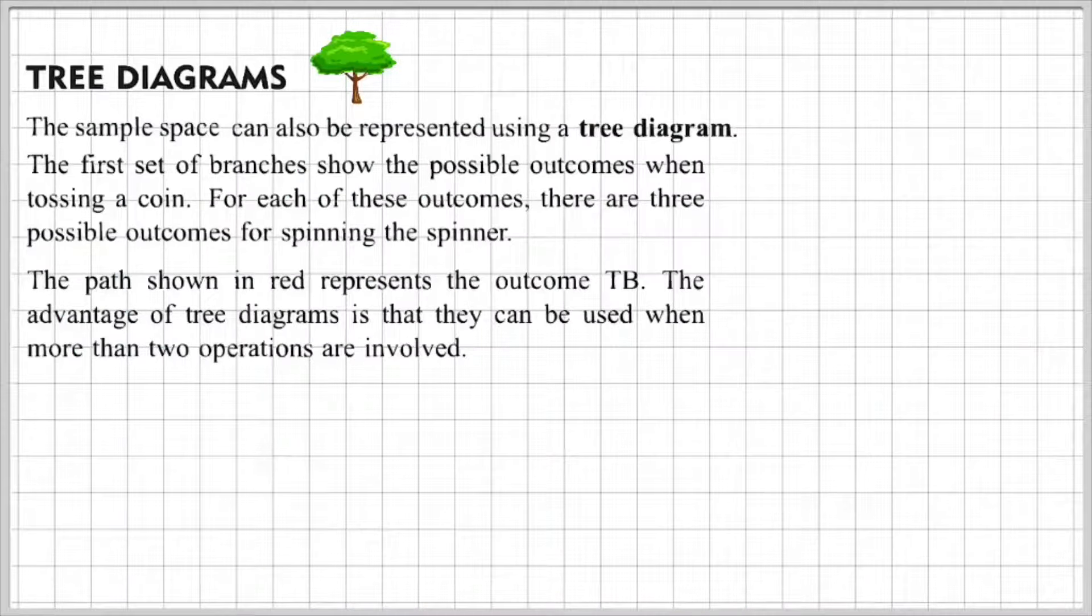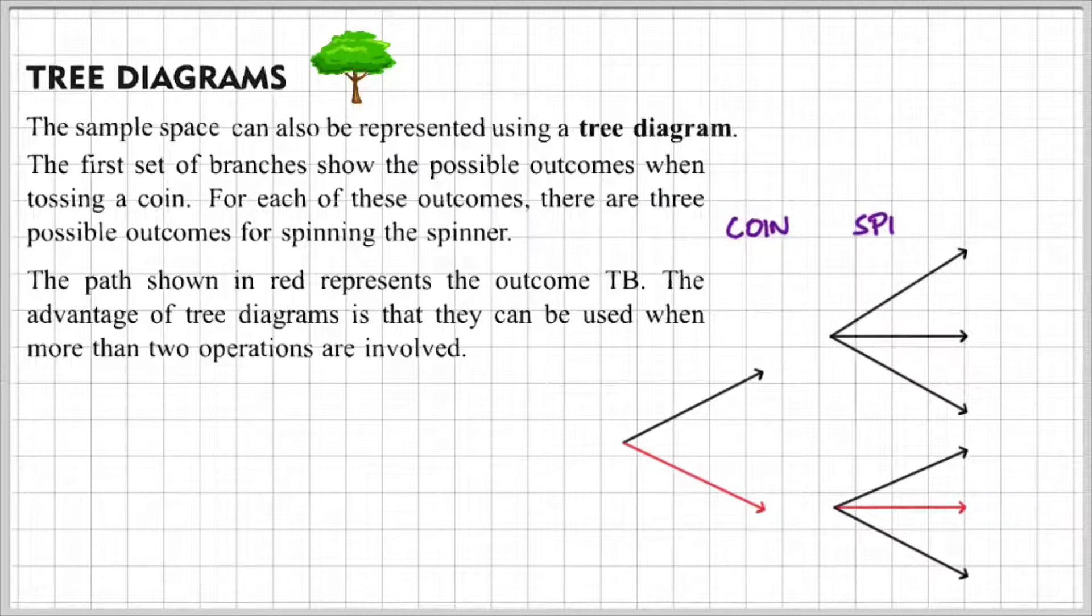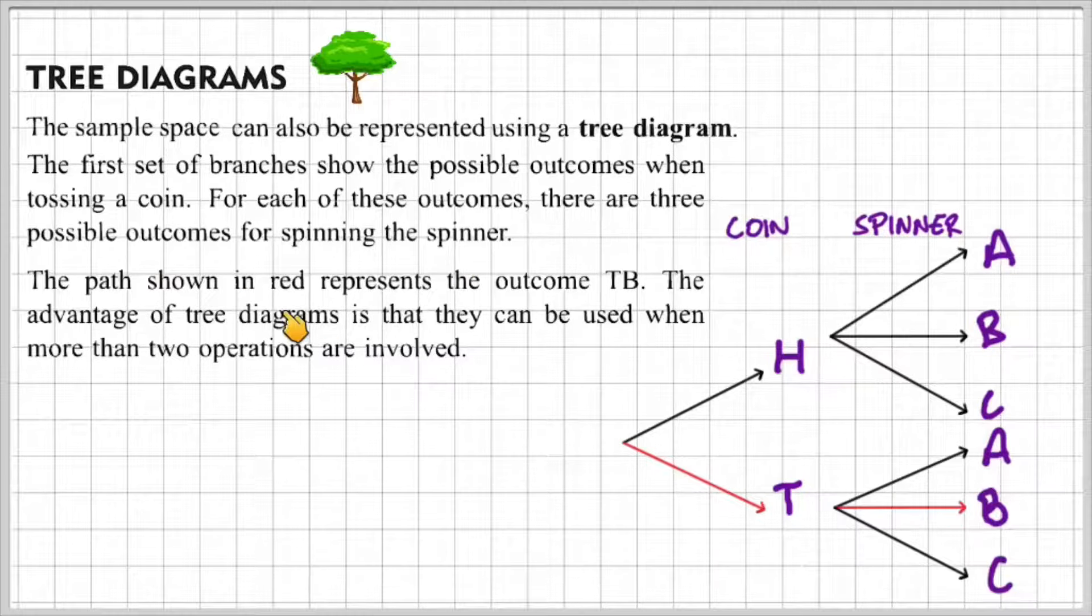The third method is tree diagrams. The sample space can also be represented using a tree diagram. The first set of branches shows the possible outcomes when tossing a coin and for each of those outcomes there are three possible outcomes for spinning the spinner. The path shown in red represents the outcome TB, that's tails and B in the spinner. The advantage of tree diagrams is that they can be used when more than two operations are involved.